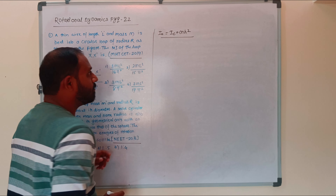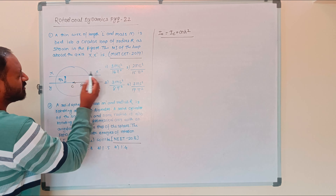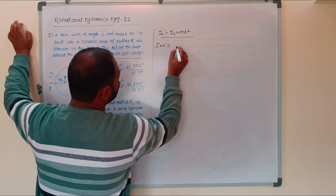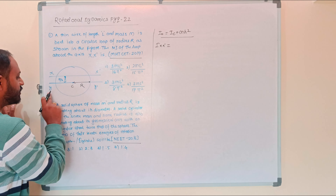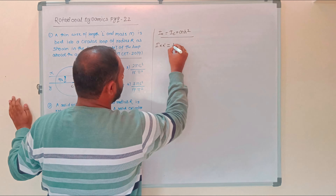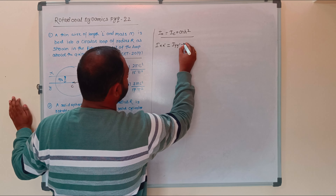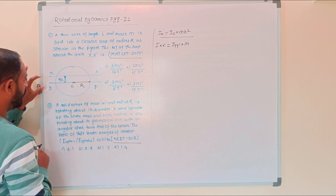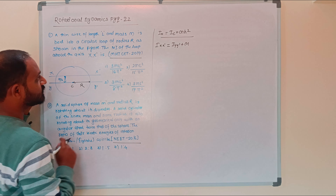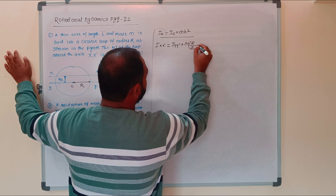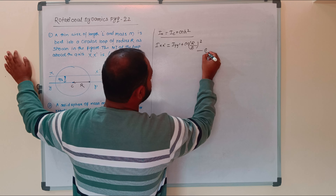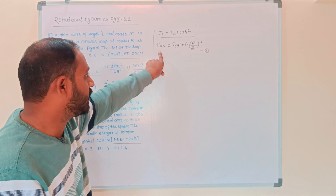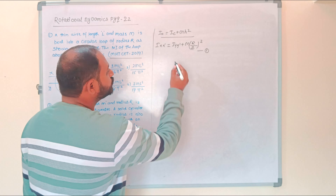The moment of inertia along XX prime equals the moment of inertia along YY prime plus M times the perpendicular distance squared. The perpendicular distance between the two axes is R/2, so we get I_c + M(R/2)². This is equation number one.